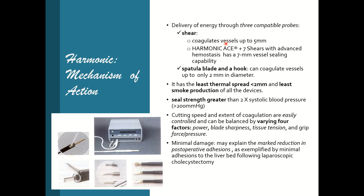With the shear, coagulation capability is up to 5 mm, but the newer Harmonic ACE goes up to 7 mm vessel sealing — roughly equivalent to a uterine artery. Initially the Harmonic was not advisable for coagulating the uterine artery, but now with the new Harmonic ACE+7 shears, even 7 mm vessels can be tackled. The spatula blade and hook can coagulate vessels only up to 2 mm in diameter. Thermal spread is less than 2 mm, and sealed vessels can withstand twice the systolic blood pressure, roughly 200 mmHg.